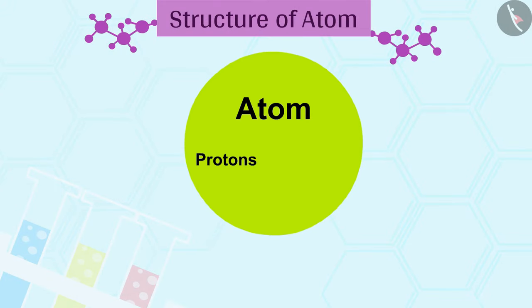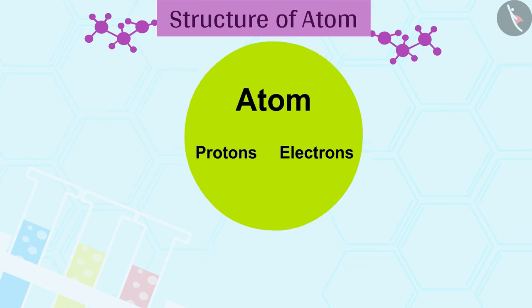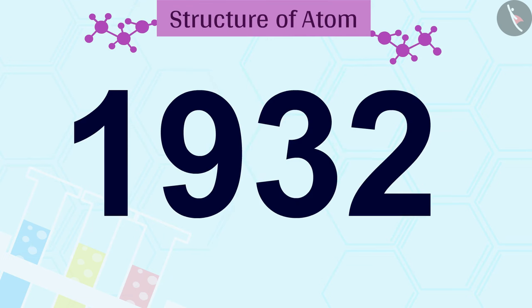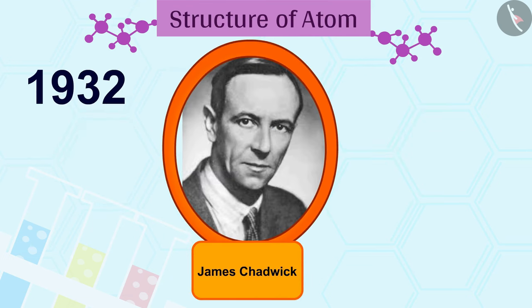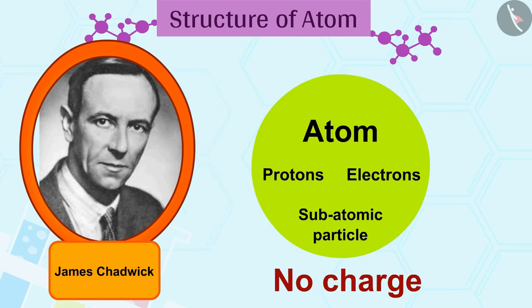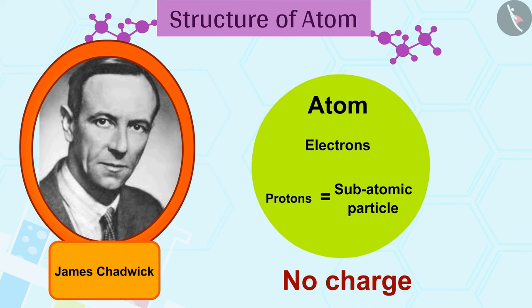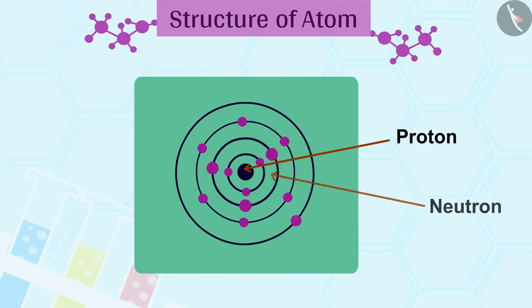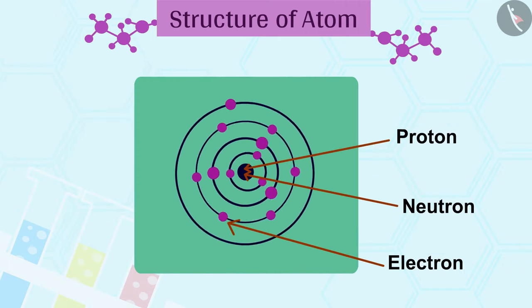Do only protons and electrons exist in an atom? In 1932, J. Chadwick discovered another subatomic particle which had no charge and a mass nearly equal to that of a proton. It was eventually named the neutron. Neutrons are present in the nucleus of all atoms.